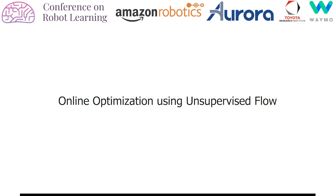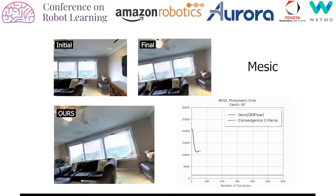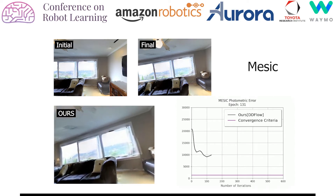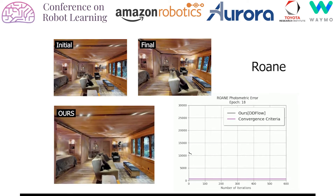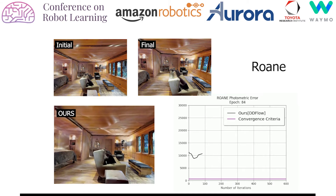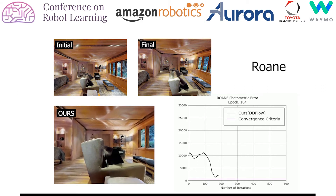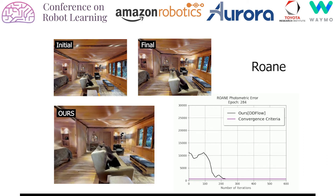We substitute the flow encoder in our pipeline with an unsupervised flow network. As can be seen in the results, our controller is easily able to converge even when the flow is unsupervised, resulting in our entire deep model predictive control pipeline being completely unsupervised. We show some more results for our completely unsupervised pipeline.